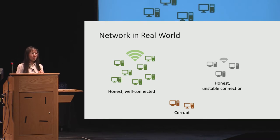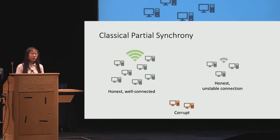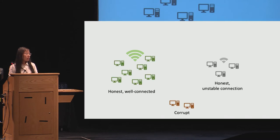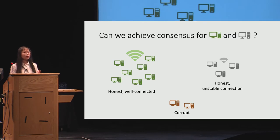Looking at the two classical timing models in this framework: in the classical synchronous network, the protocol only cares about nodes who are forever green. If any honest node ever drops offline and joins the grey set, it is considered corrupt and no consensus is guaranteed for it. In the classical partially synchronous network, the protocol does not take advantage of the good connection between green nodes, so it cannot tolerate more than one-third corruption. What we want is to build a new model that achieves consensus for both green and grey nodes while still leveraging the good connection between green nodes to get better resilience than one-third.